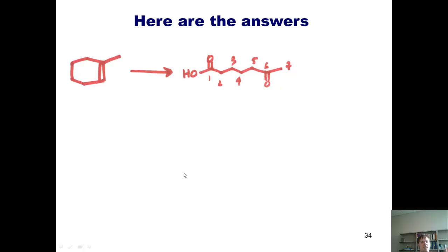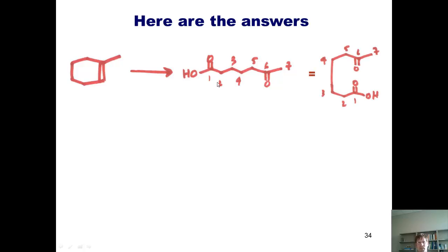Now let's give the answer to our second problem. How can I convert this cyclohexene to this product shown here to the right? The major difference between this product and the one in the previous problem is that this product has an OH at this position instead of just an H. You might look at this and say this product doesn't look anything like the starting material, but if you reorient the product it does indeed look closer to the starting material. What I need to do is come up with a way of cleaving this carbon-carbon double bond, placing oxygens on there, and then somehow getting an OH to appear down here.